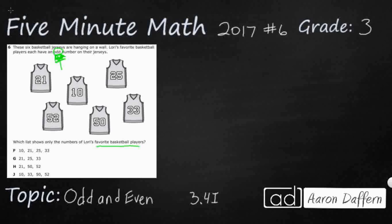So let's talk about odd and even real quick. An easy way to think about it is that even numbers can be divided into equal groups. So we're going to make a list of odd and even numbers. If I were to take 0 and divide it into equal groups, I would have two equal groups of 0. So 0 is an even number.